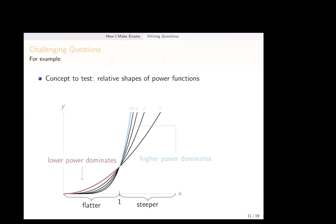So here's my topic, the relative shapes of power functions. If I have x squared, x cubed, x to the fourth, close to zero, lower powers are much bigger relatively than smaller powers. Far from zero, it's the opposite. So this is what I want to test.